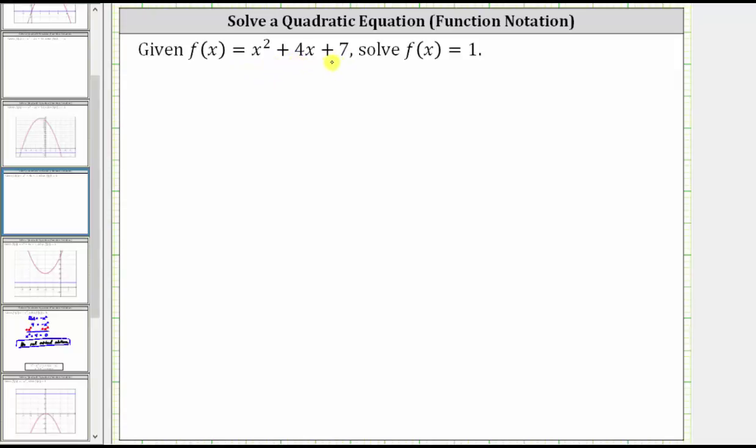Given f of x equals x squared plus four x plus seven, solve f of x equals one. To solve f of x equals one, we are looking for the values of x, the inputs of this function for which the output is positive one.